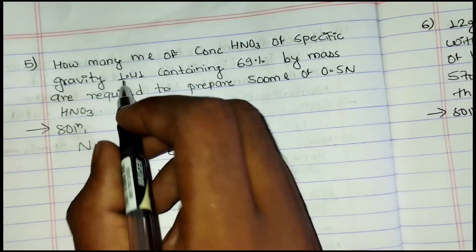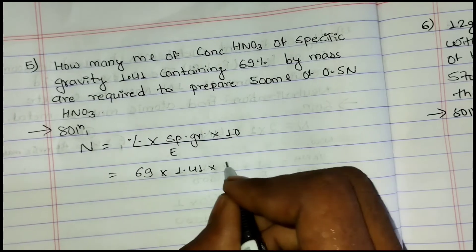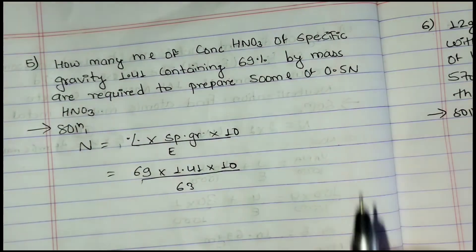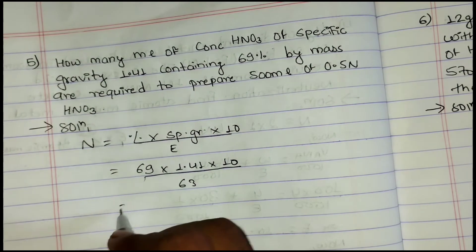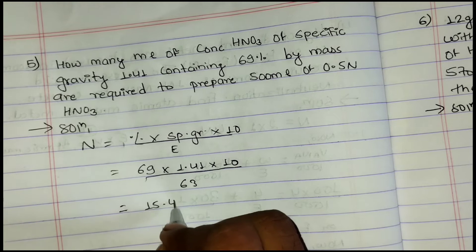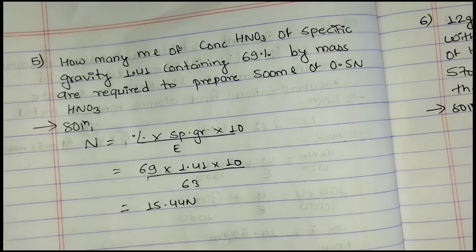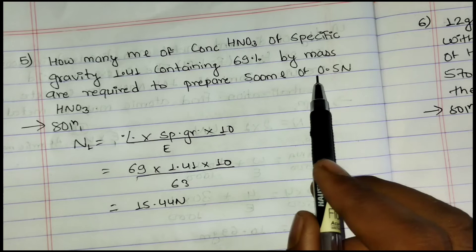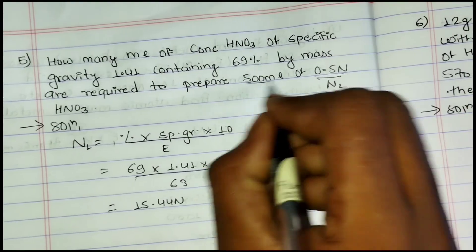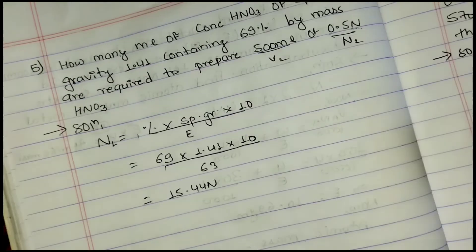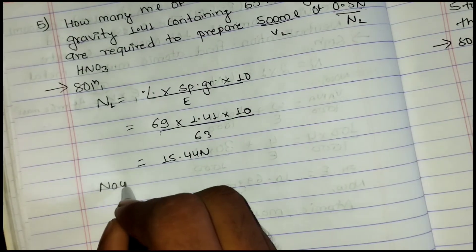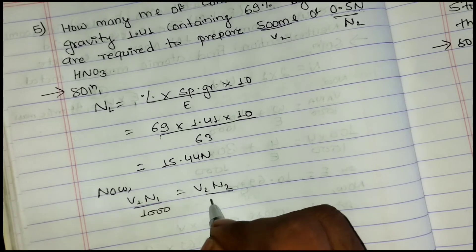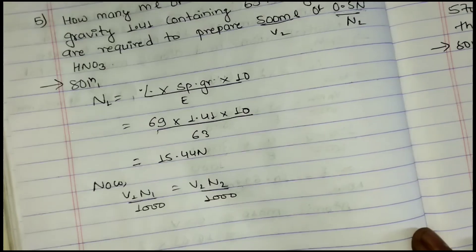Calculating normality of concentrated HNO₃: N₁ = (69 × 1.41 × 10) / 63 = 15.44N. For dilution, using V₁N₁ = V₂N₂: V₁ × 15.44 = 500 × 0.5. Therefore V₁ = (500 × 0.5) / 15.44.